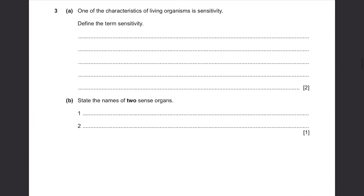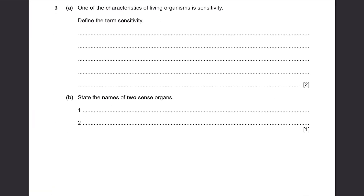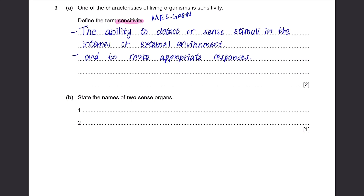Question 3, Part A. One of the characteristics of living organisms is sensitivity. Define the term sensitivity — it's one of those MRS GREN definitions you must memorize. Sensitivity is the ability to detect or sense stimuli in the internal or external environment and to make appropriate responses. You need every single word from this to get full marks.